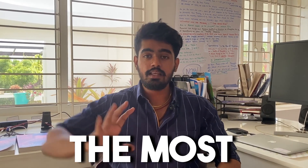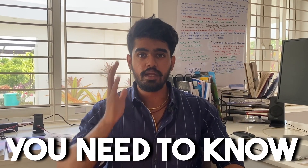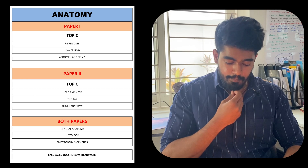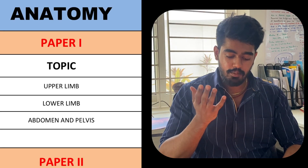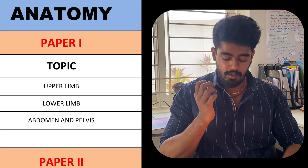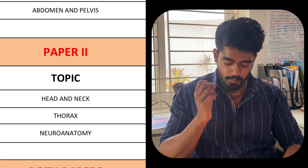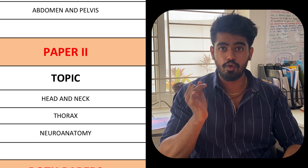In this video, I will be talking about the most high priority questions that you need to know if you want to pass. For paper 1, the topics will be upper limb, lower limb, abdomen and pelvis. And for paper 2, the topics will be head and neck, thorax and neuroanatomy.